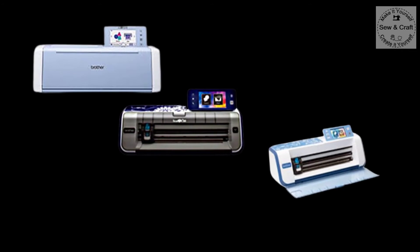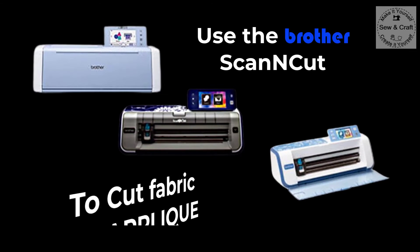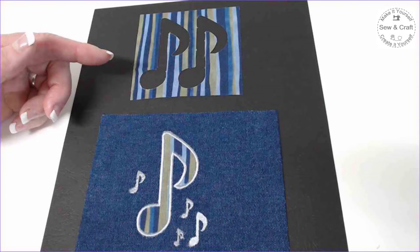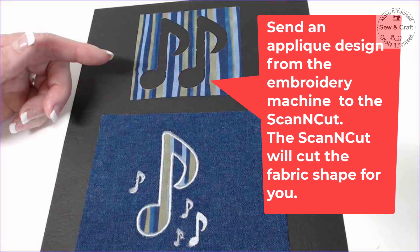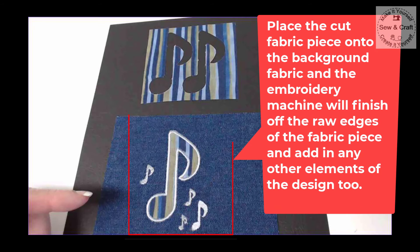If you own any one of the Brother Scan and Cut models, you can use them to cut fabric for applique. All you need to do is send an applique design from your embroidery machine to the Scan and Cut, and the Scan and Cut will cut the applique fabric shape for you. Then you'd simply take that cut piece of fabric and place it onto your background fabric. Then the embroidery machine will finish off the raw edges of the fabric piece and even add in any other elements of the design too.